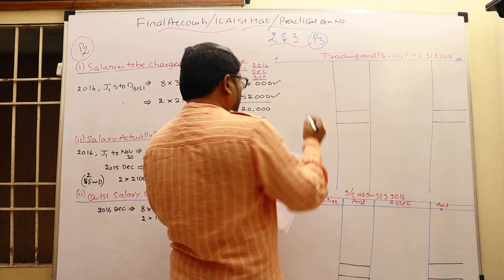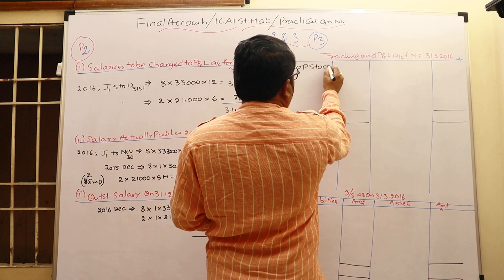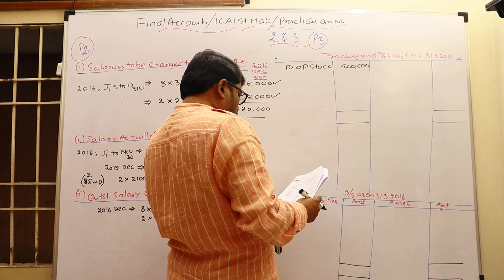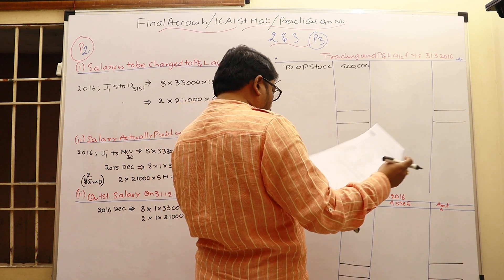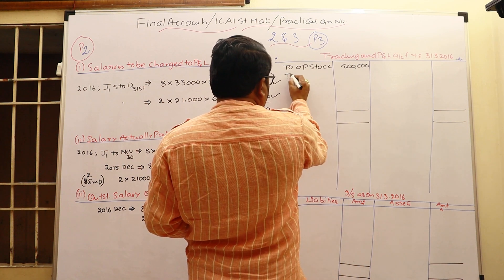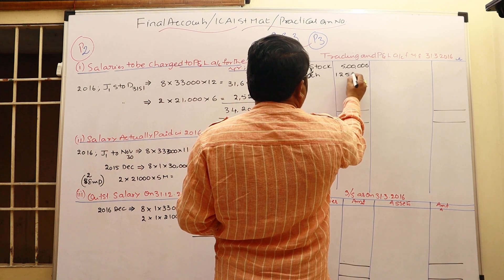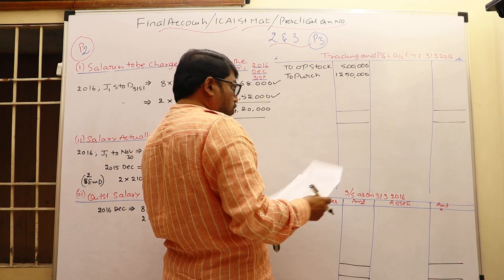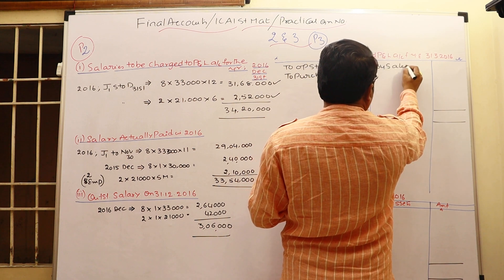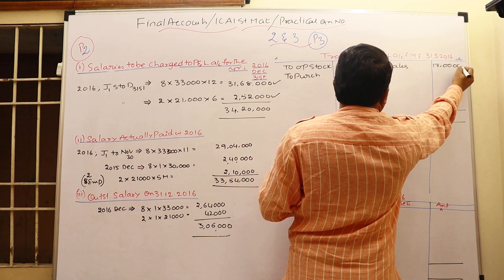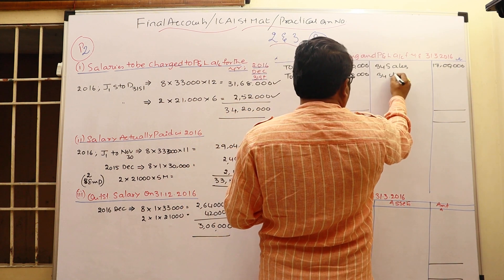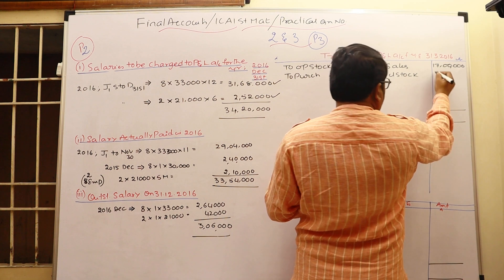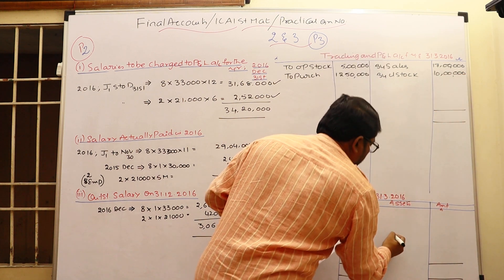First, take the opening stock in the trading account. Next, purchases on the debit side: ₹12,50,000 — no purchase returns. Sales on the credit side: ₹17 lakhs — no sales returns. Closing stock is given as an adjustment, so it is taken on the credit side of the trading account as well as a current asset: ₹10 lakhs.